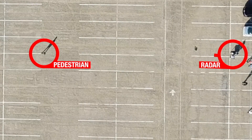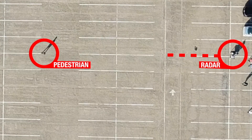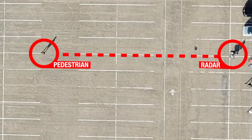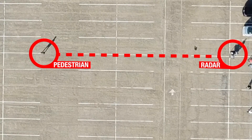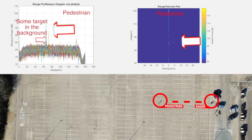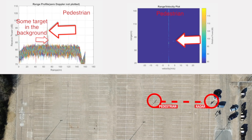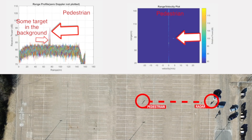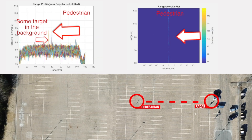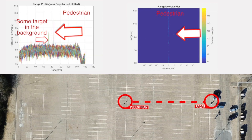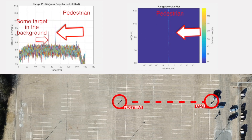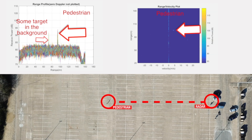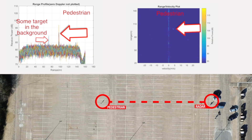In the next video, we demonstrate the cascade radar's ability to detect pedestrians at far range. The cascade radar is operating in TX beamforming mode with 9TX transmitting at the same time. We can see that the pedestrian can be detected reliably beyond 100 meters.